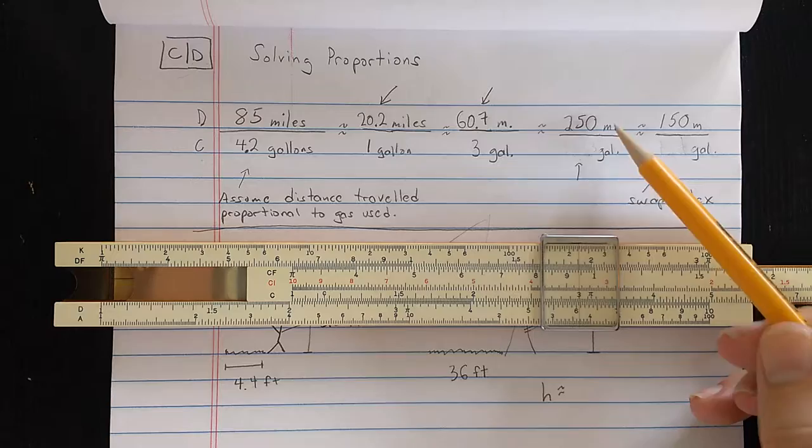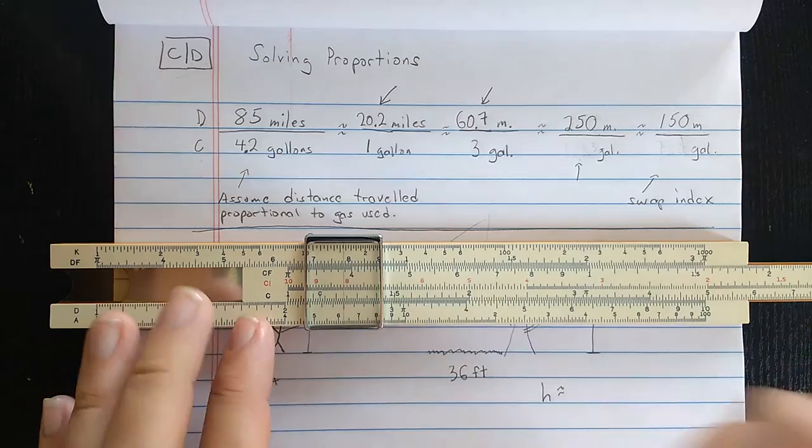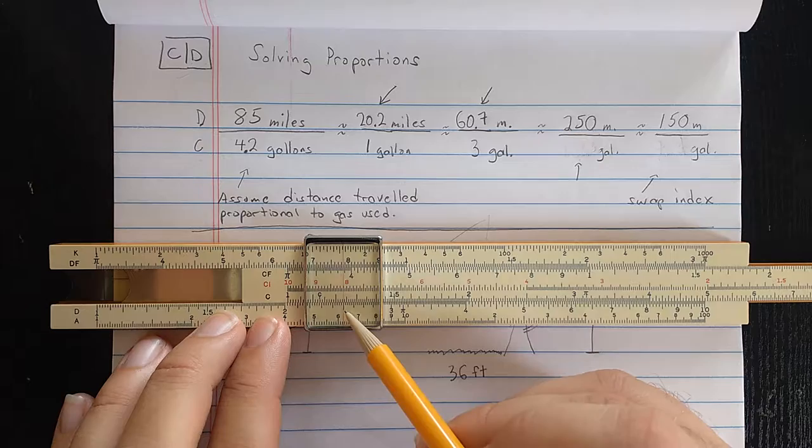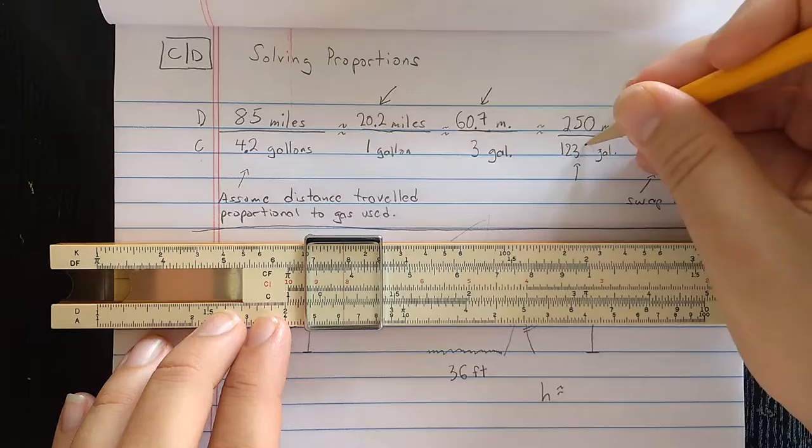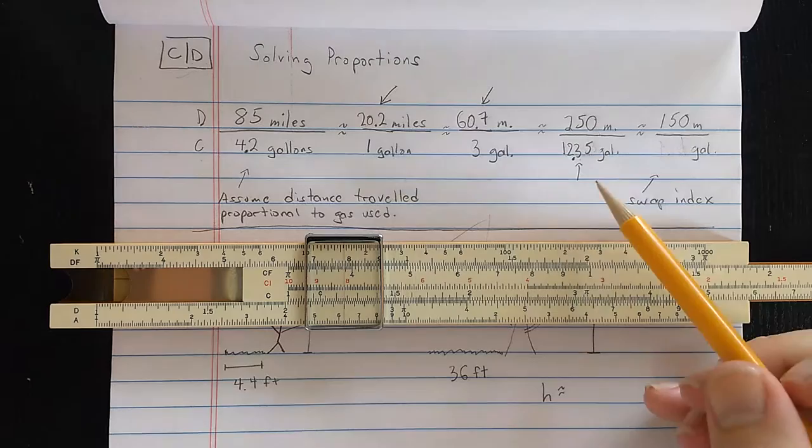Now the question instead is, what if I want to know how many gallons to use to go 250 miles? Well, I can find that 250 on the D scale by finding the 2.5 here, and then reading the number of gallons of gas I need on the C scale. So let's see, that's 1, 1.1, 1.2, looks like about 1.23 and a half.